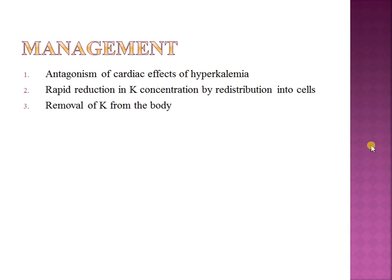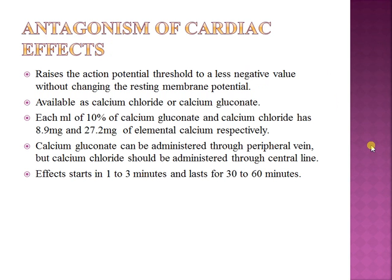Managing hyperkalemia involves three key steps. First, acutely antagonize the effects of hyperkalemia on cardiac myocytes — this is critical because serum potassium of 8 or 9 mEq/L can cause fatal arrhythmias. Second, rapidly shift potassium from blood into cells through redistribution. Third, permanently remove potassium from the body to prevent rebound hyperkalemia.